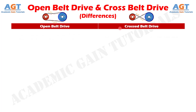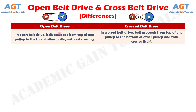Difference number 1: in open belt drive, the belt proceeds from the top of one pulley to the top of the other pulley without crossing, whereas in crossed belt drive, the belt proceeds from the top of one pulley to the bottom of the other pulley and thus crosses itself.